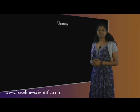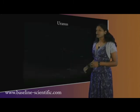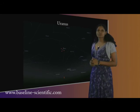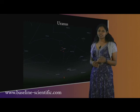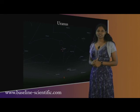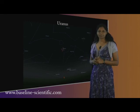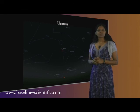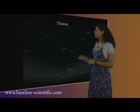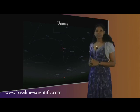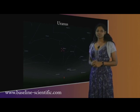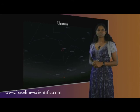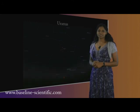Uranus at a magnitude of 5.9 will be easily visible in a small telescope. Don't expect to see any detail, but you should be able to make out a small blue disk. It will be more than 30 degrees above the horizon as it passes the meridian, so makes a good observing target for the early part of the night. But it will set at about 3 o'clock by the end of the month.